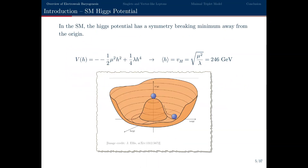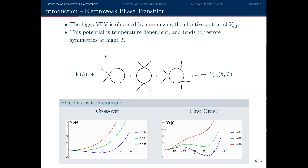Briefly touching on the electroweak phase transition: in the standard model there's the Higgs mechanism where the potential is minimised when the Higgs gains a VEV away from the origin, spontaneously breaking electroweak symmetry. What you actually need to minimise is the effective potential, which includes loop contributions depending on all particles and couplings in your model. At very high temperatures, this potential picks up temperature dependence, and as the temperature changes, the potential evolves.